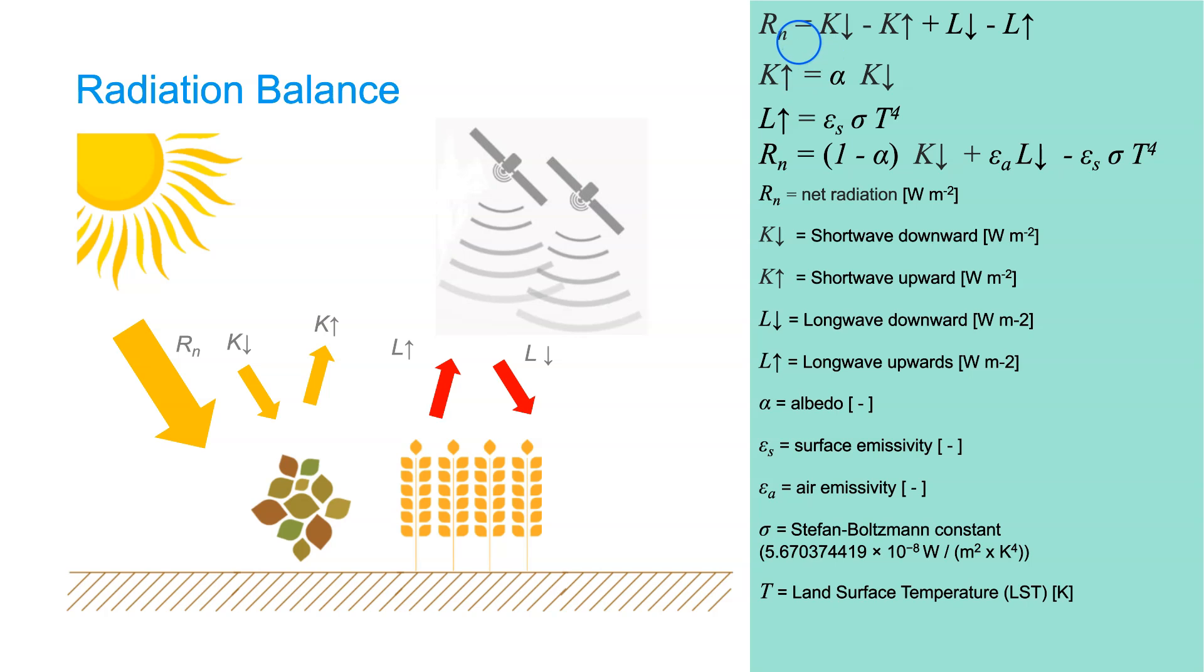In equations, it looks like this. The shortwave outgoing radiation is a function of the surface albedo, α, times the incoming shortwave radiation. The longwave outgoing radiation is the emissivity of the surface times the Stefan-Boltzmann equation, which is the Stefan-Boltzmann constant times temperature to the power of 4. When we substitute this, we get that the net radiation equals (1 - α) times incoming shortwave radiation plus εa times the incoming longwave radiation minus εs times the Stefan-Boltzmann constant times the temperature to the power of 4.